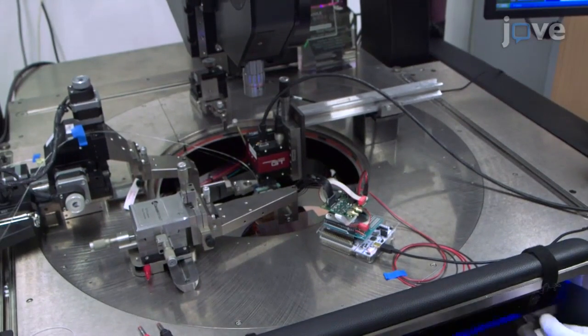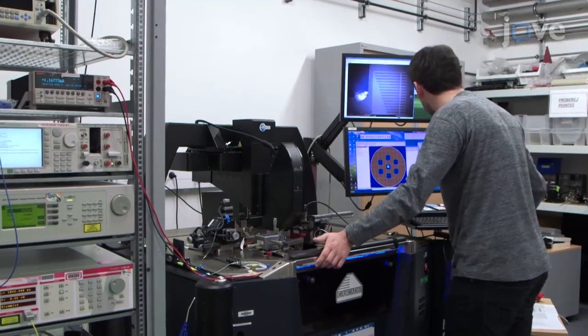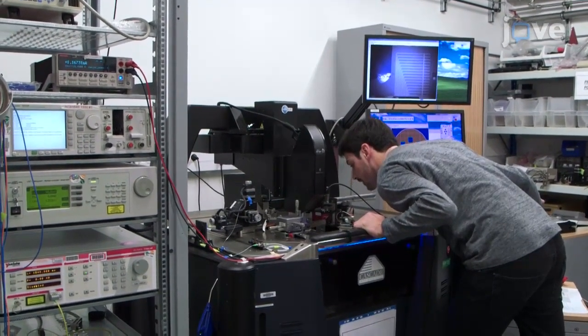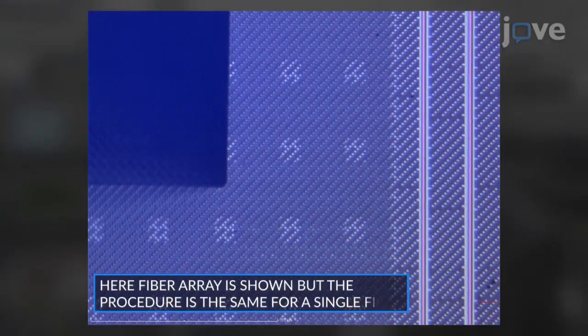To align the fibers, use a light microscope to carefully lower the fiber until it touches the wafer surface away from the input grating coupler, before moving the fiber up about 20 micrometers.